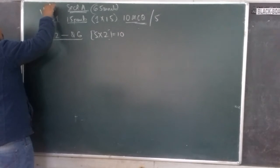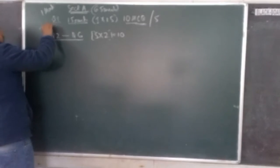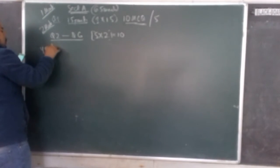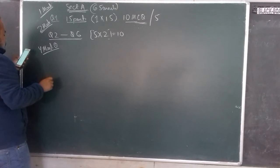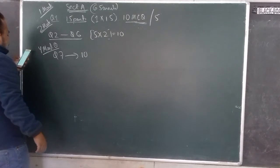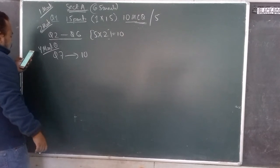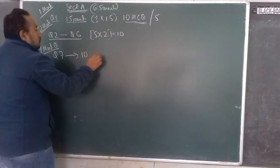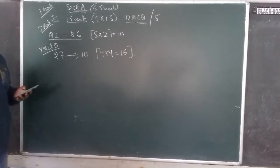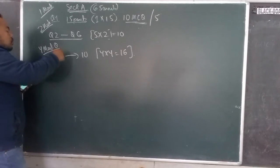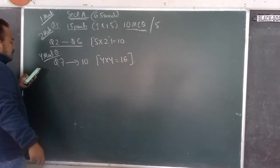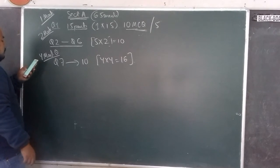Now we have 4-mark questions. From question number 7 to question number 10, you will have 4 questions for 4 marks each, that is 4 × 4 = 16, in which two internal choices will be given for question number 9 and question number 10.